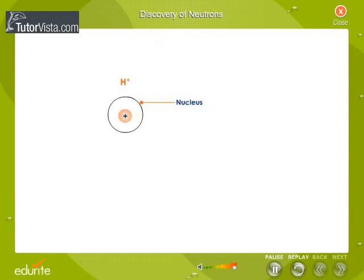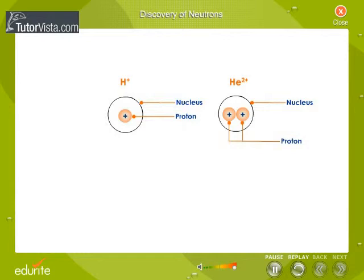But we know that hydrogen has one proton in its nucleus, whereas helium has two protons. If the protons were the only particles in the nucleus, then a helium nucleus would have two protons and therefore only twice the mass of hydrogen.